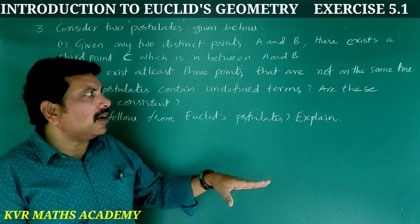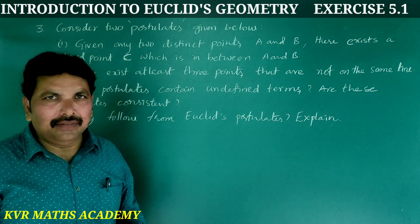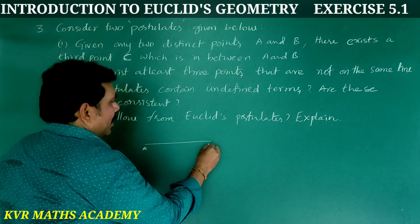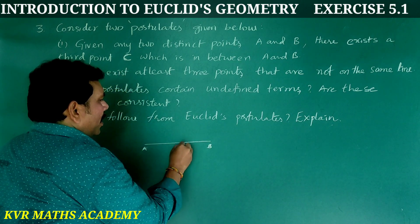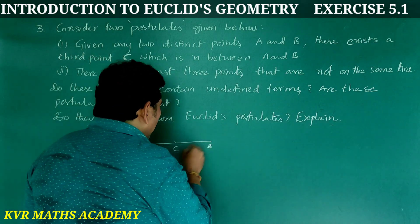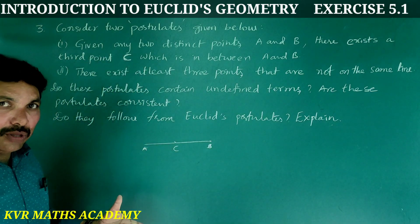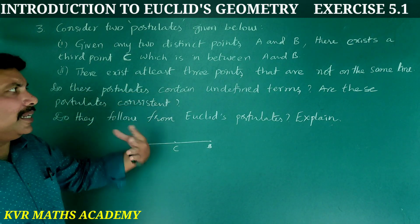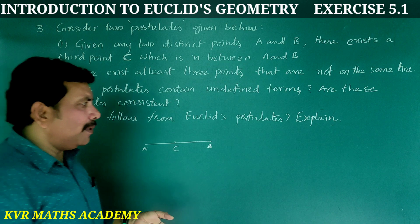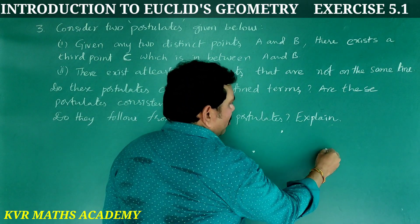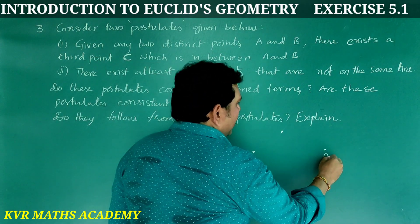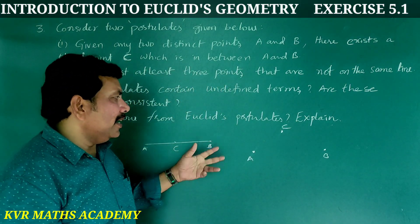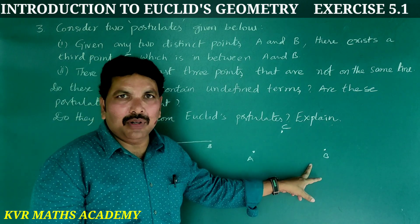Second: There exist at least three points that are not on the same line. So given points A and B, suppose A, B, C, E are not on the same line.